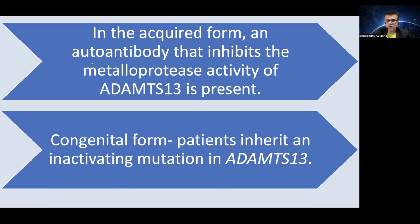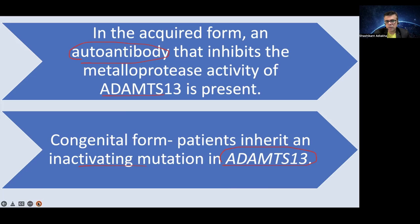TTP could be the acquired form or the congenital form. In the acquired form, an auto-antibody is seen, which may develop secondary to various autoimmune conditions, blood transfusion, or various hematological conditions. This auto-antibody inhibits and degrades ADAMTS13, thereby causing persistent elevation of von Willebrand factor. In the congenital form, the patient is born with inactivating mutations of ADAMTS13, so ADAMTS13 is deficient and non-functional from childhood.